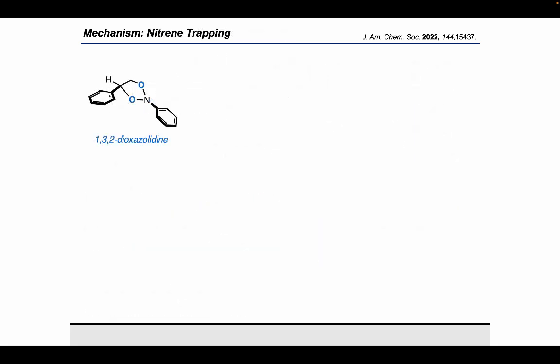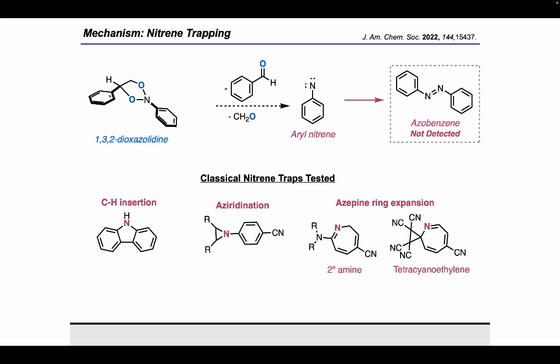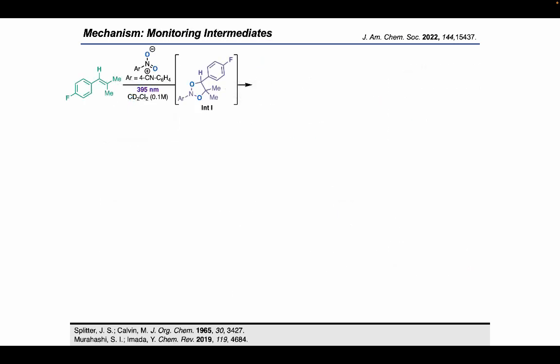As I mentioned before, there are two possibilities for fragmentation, the radical pathway and the polar pathway. If the reaction went through a radical concerted mechanism, we would get a nitrene product alongside our carbonyls, which then could dimerize to give us an azobenzene, which Buki and I are detected under their UV-light conditions. However, we were not able to detect any azobenzene in our reactions. To further disprove the radical pathway, we tested some nitrene traps, such as CH insertion, aziridination, and a couple azepine ring expansions with secondary amines and tetracyanoethylene. However, none of these nitrene products were ever detected. So if this reaction doesn't go through a radical pathway, then maybe it goes through a polar one.